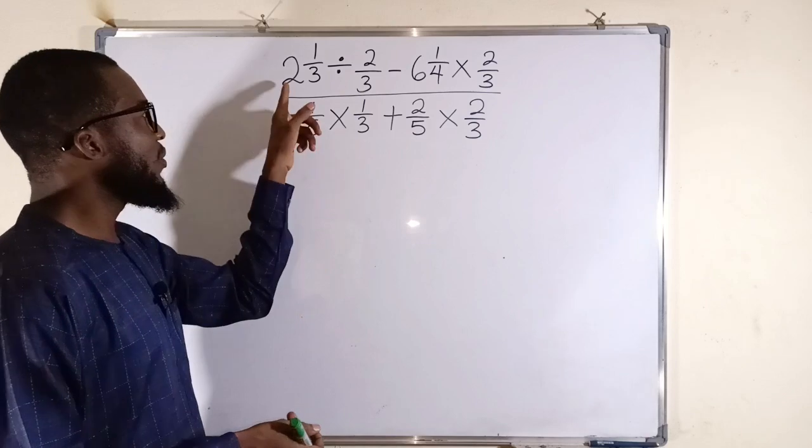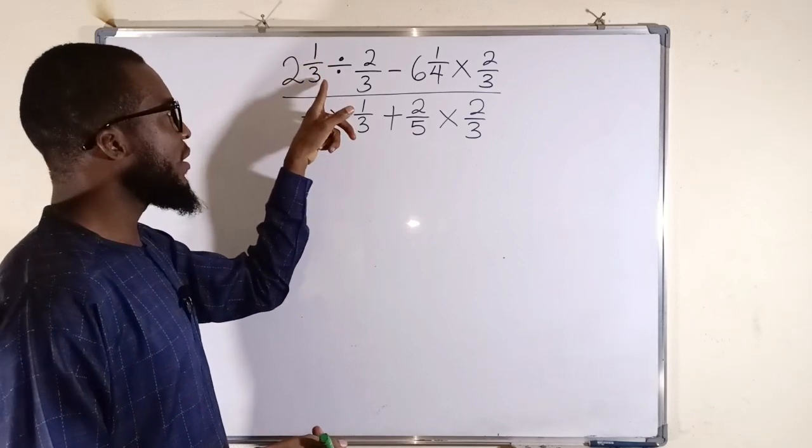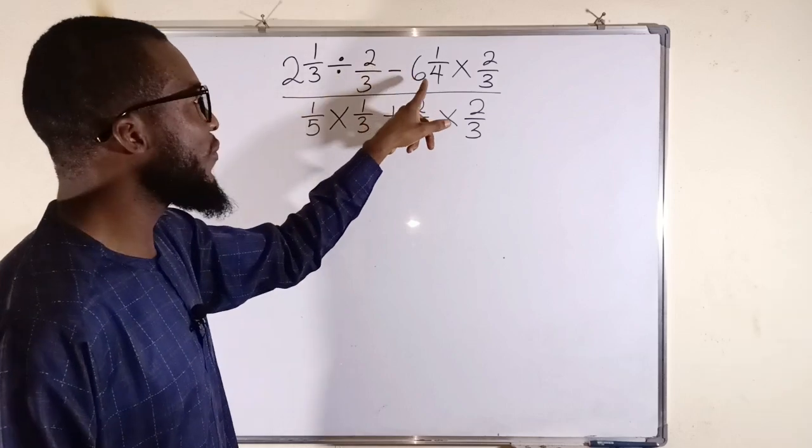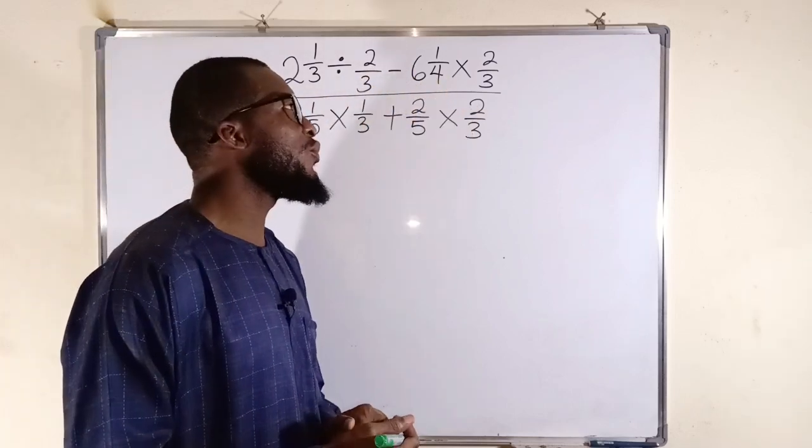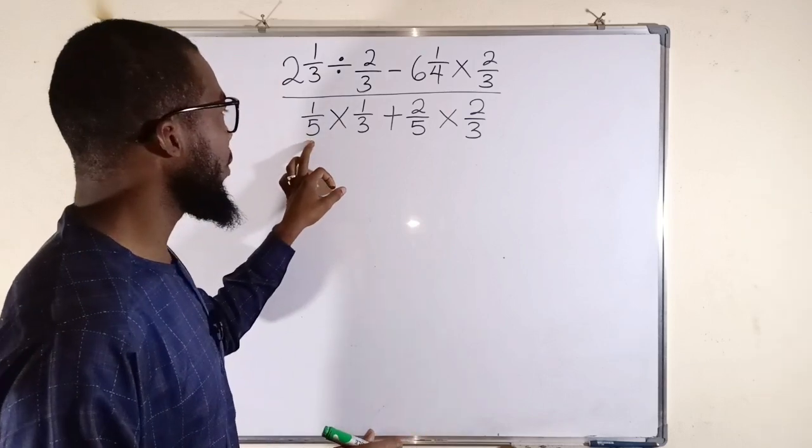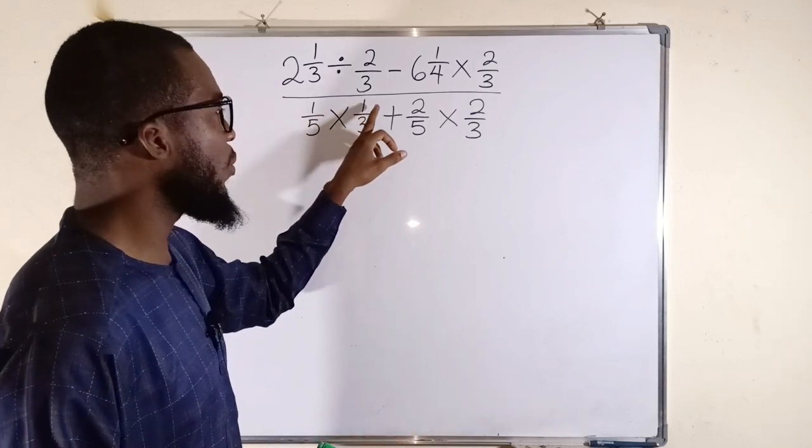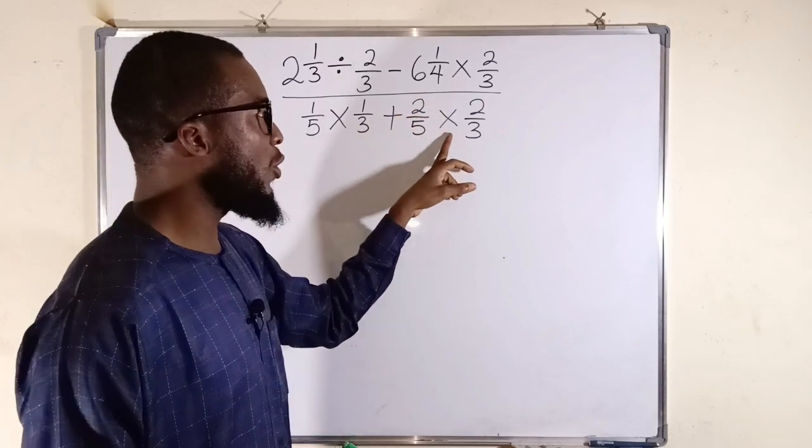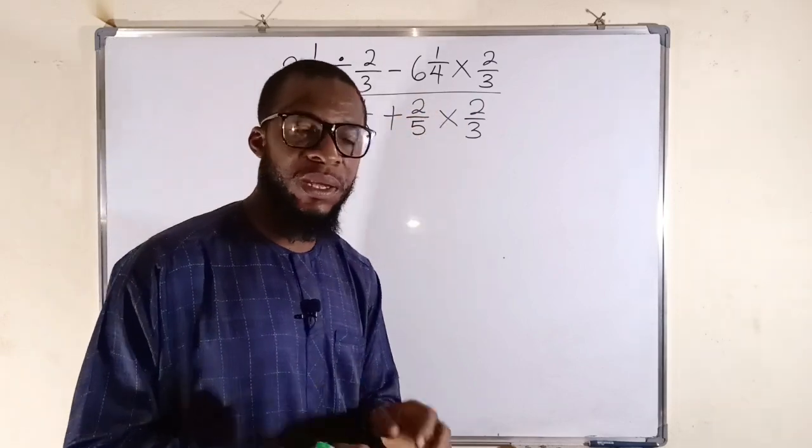We want to simplify 2 whole 1 divided by 3 divided by 2 divided by 3 minus 6 whole 1 divided by 4 multiplied by 2 divided by 3. All divided by 1 divided by 5 multiplied by 1 divided by 3 plus 2 divided by 5 multiplied by 2 divided by 3.